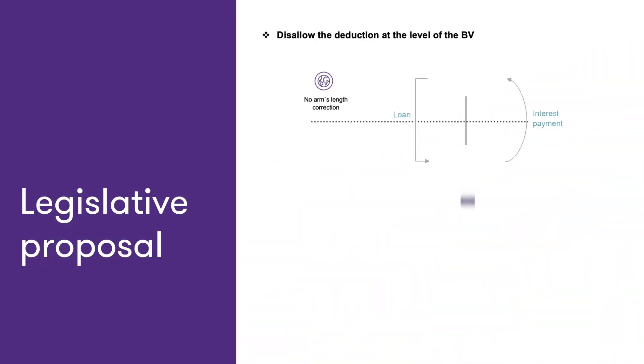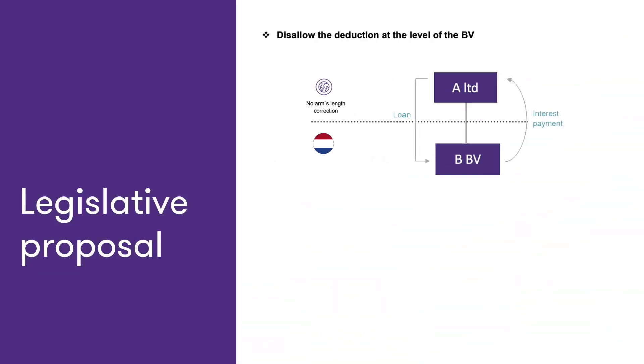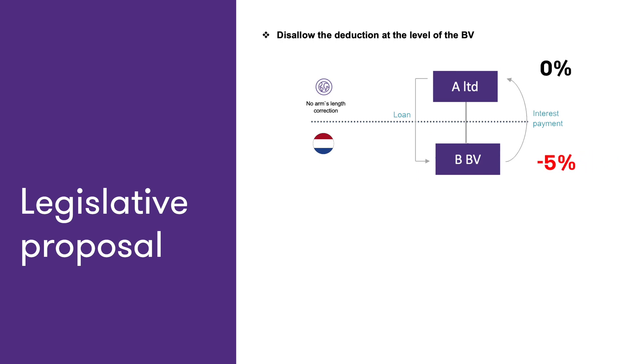In the first example of this slide, the Netherlands will disallow the deduction of interest as there is no upwards adjustment at the level of A Limited.